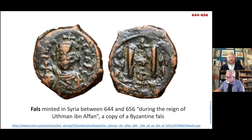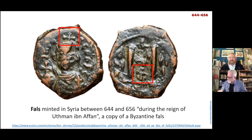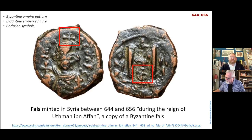It's the same with this other coin, also minted between 644 and 656, which is also a copy of a Byzantine follis. We still have the crosses and the Byzantine emperor figure. How could a Muslim in his right mind put a Christian sovereign on his own coins? This is not a Muslim coin — it is a Christian coin, or a quasi-pseudo-Christian coin, still using the Byzantine Empire pattern, figure, and Christian symbols.